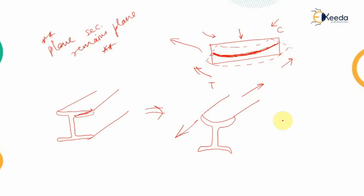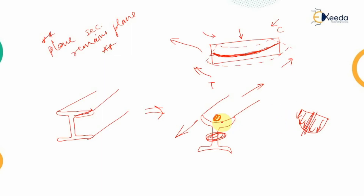Because of that non-uniform distribution, the stress distribution in the top flange will be such that at the portion of the web the stress will be maximum, while at the position of maximum distance from the web the stress will be minimum. As we move away from the web, the stress keeps on decreasing.